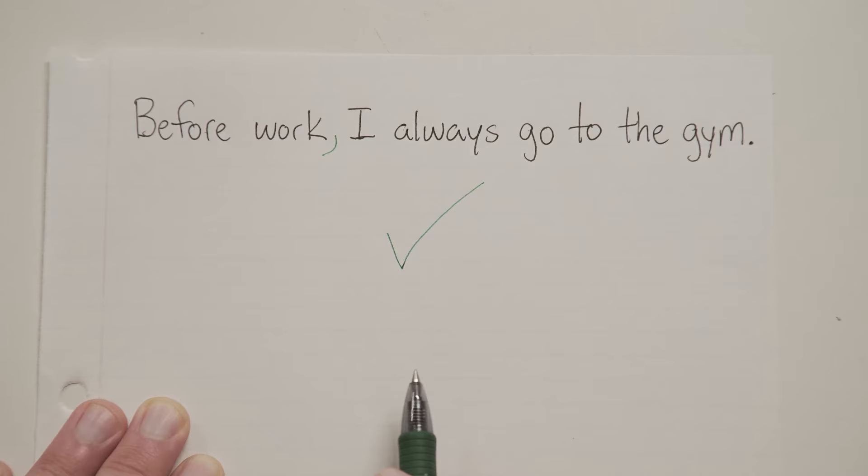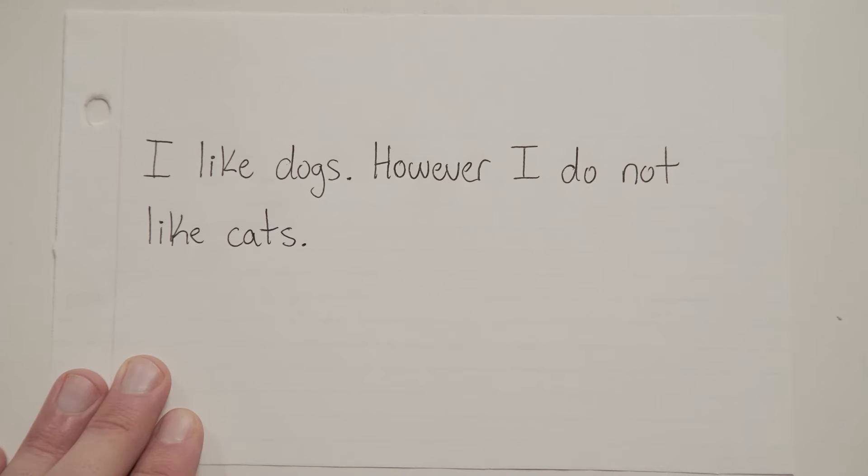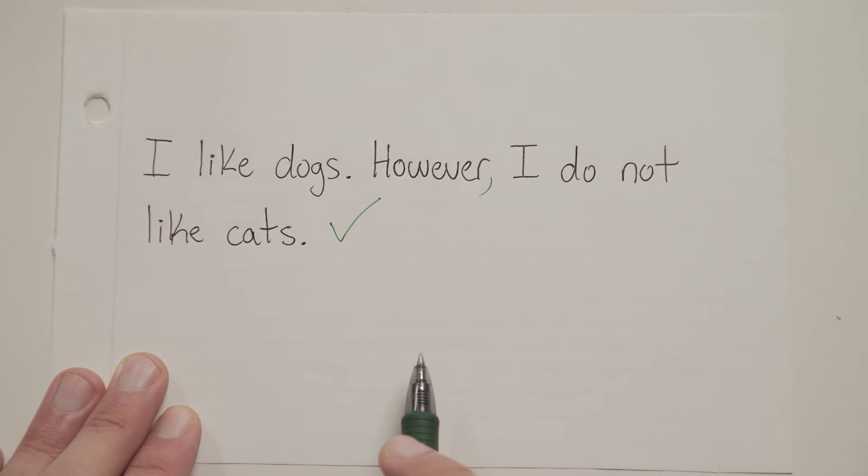Transitions are very much the same. Let's imagine we have the sentence, I like dogs. And then right after that is the sentence, however, I do not like cats. However is a transitional word that joins these two sentences together. So all we need to do is throw in a comma after it.